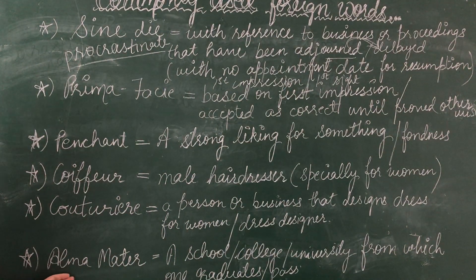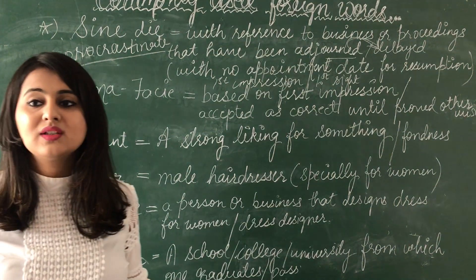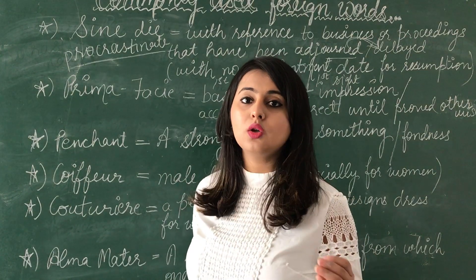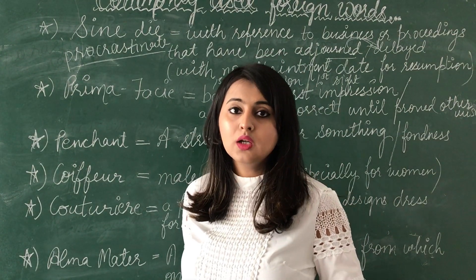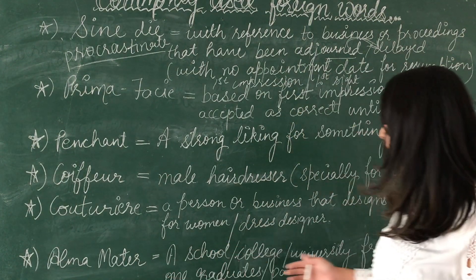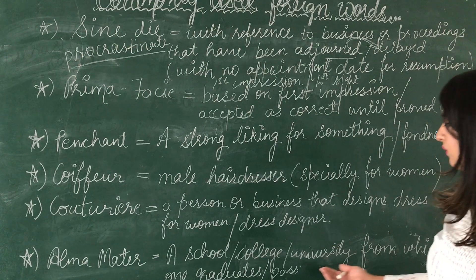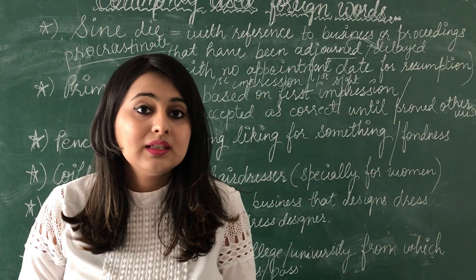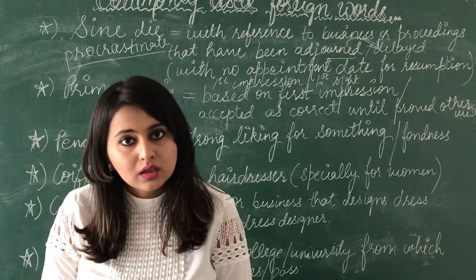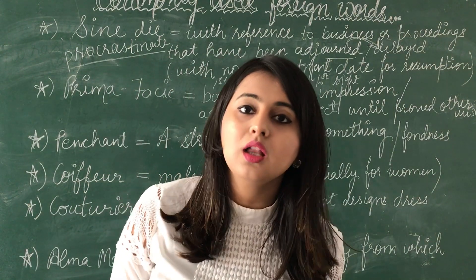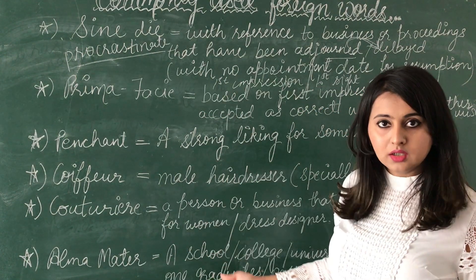Next is 'alma mater', spelled A-L-M-A M-A-T-E-R. We pronounce it like 'alma mater'. Alma mater means the school, college, or university from which one graduates or passes out. For example: I have started teaching at my alma mater — the same school I passed out from, I am now teaching there.